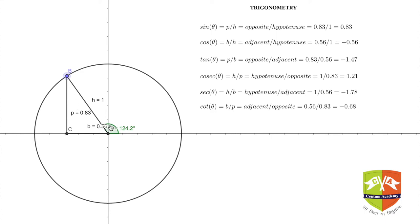If you have to find sine of 124.2, drop the perpendicular from B which happens to be positive. The foot of the perpendicular, point C, is away from A in the negative direction. Hence sin θ here will be opposite by hypotenuse, which is 0.83 in the positive direction divided by 1, the hypotenuse length of the radius, and the value is 0.83.